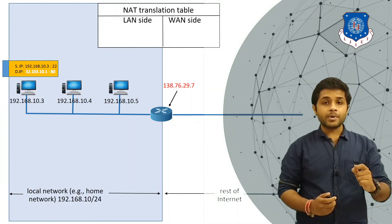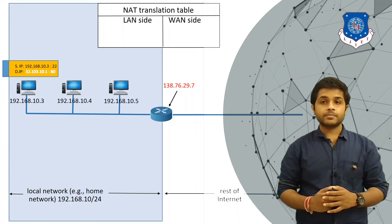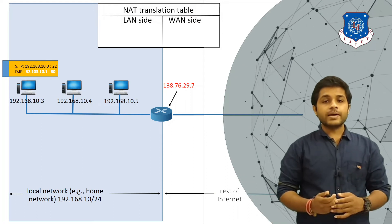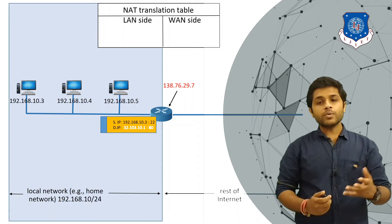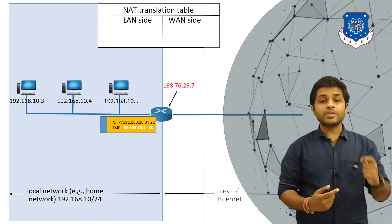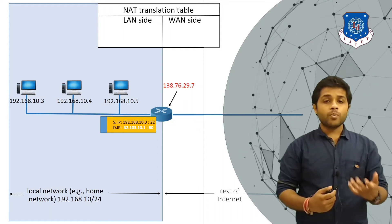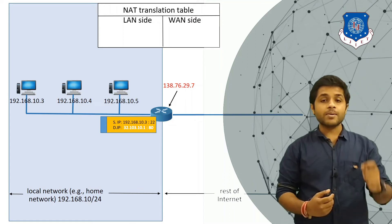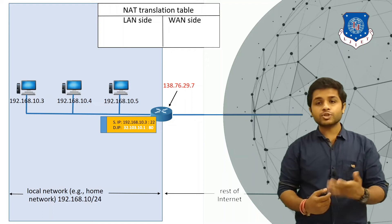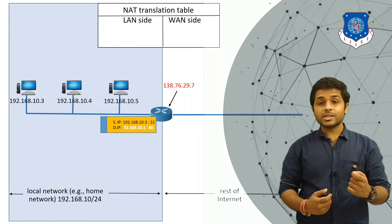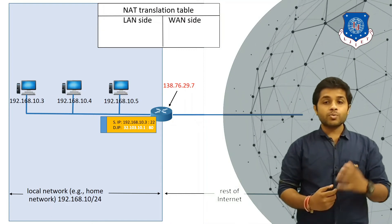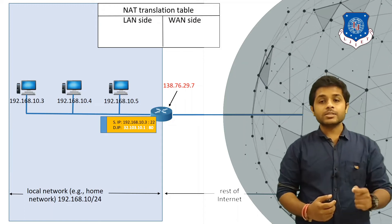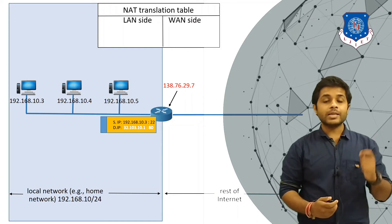Initially, the router's Network Address Translation table is empty — you can see the LAN side and WAN side fields are both empty. When the router receives this message, it cannot forward it directly because the message contains a private IP address. If forwarded to the internet, other routers would discard it since they discard any message with a private IP. So the router will make changes to the message and create an entry in the NAT table.